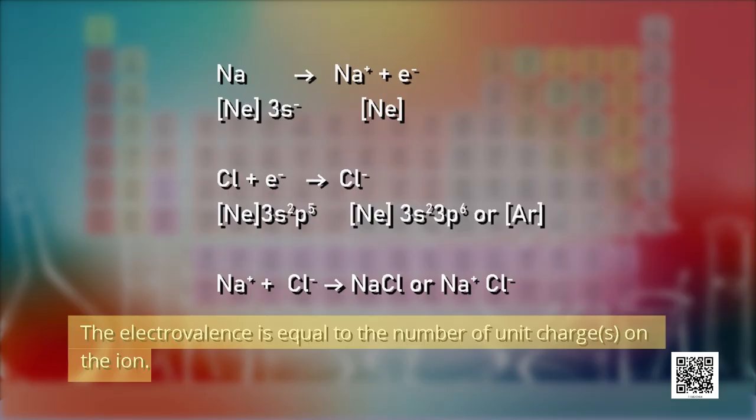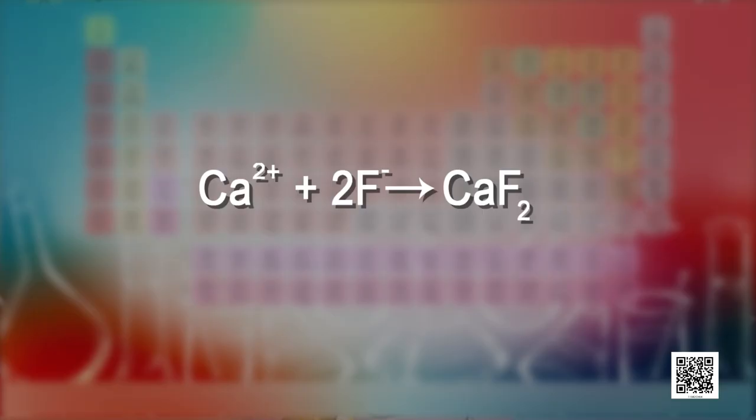Electrovalence is equal to the number of unit charges on the ion. In the formation of CaF2, calcium is assigned a positive electrovalence of 2, while fluorine has a negative electrovalence of 1. This was Kossel's first insight into the mechanism of formation of electropositive and electronegative ions, and he related this process to the attainment of noble gas configurations by the respective ions.